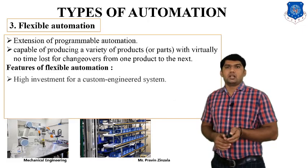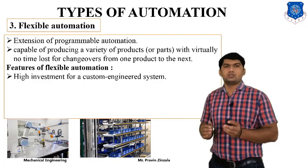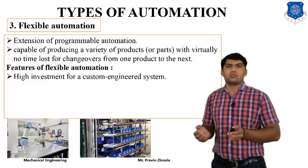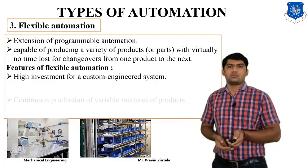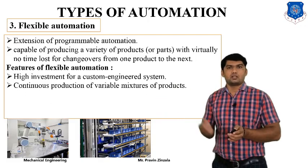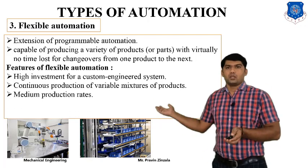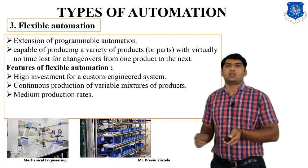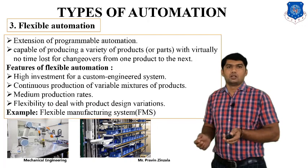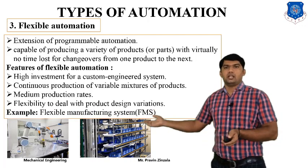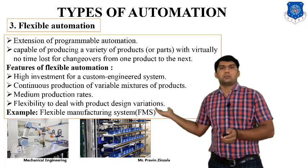Features of flexible automation include a high initial investment for the custom engineered system, as it requires many components including electronic components, different types of sensors, and various hydraulic and pneumatic system components, making initial cost higher. It enables continuous production of a variety mixture of products. The production rate is medium compared to programmable and fixed automation. It is flexible in dealing with product design variations, allowing production of components with different diameters and configurations. Examples include rocket production, space applications, and flexible manufacturing systems.